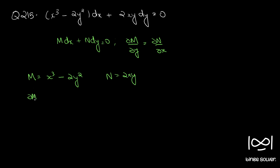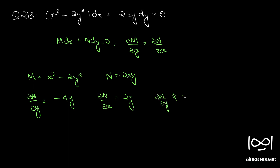So ∂M/∂y is minus 4y and ∂N/∂x is 2y. Since ∂M/∂y is not equal to ∂N/∂x, the given differential equation is not exact.